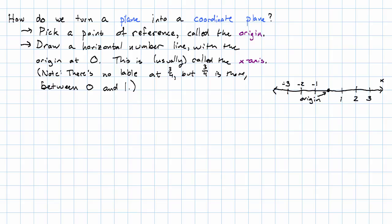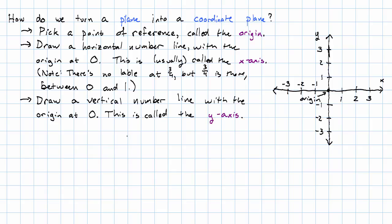So we've drawn a horizontal number line with the origin at zero. We also draw a vertical number line. And again, notice that even though I haven't labeled, for example, seven-ninths, seven-ninths is there in between zero and one.